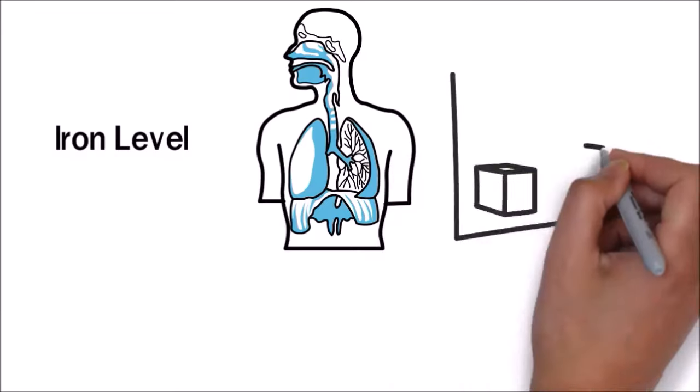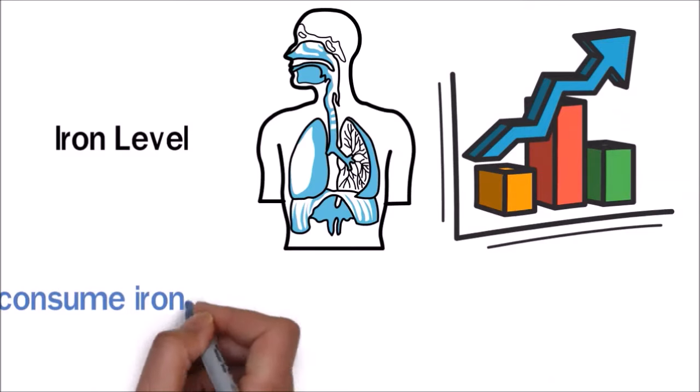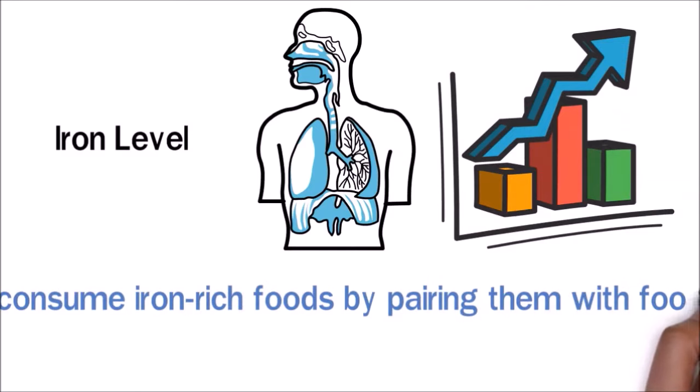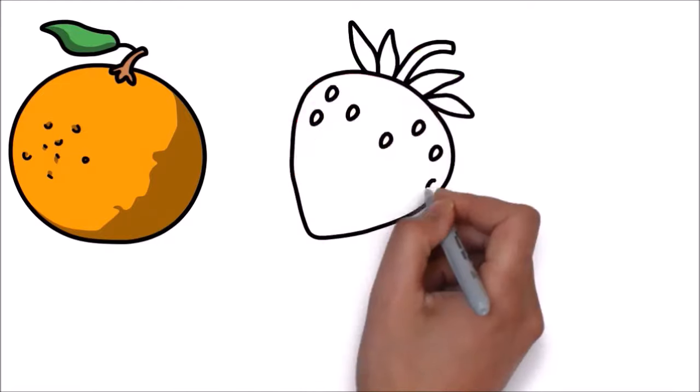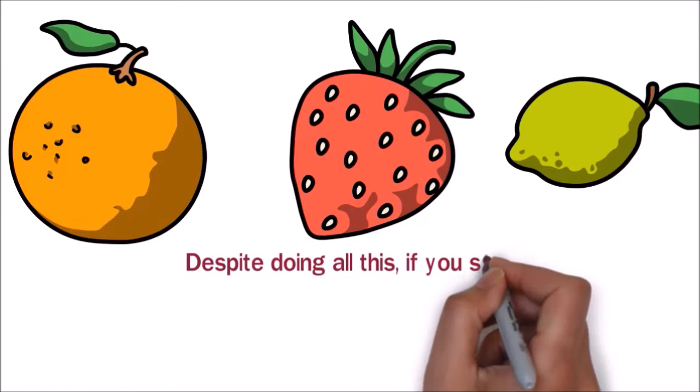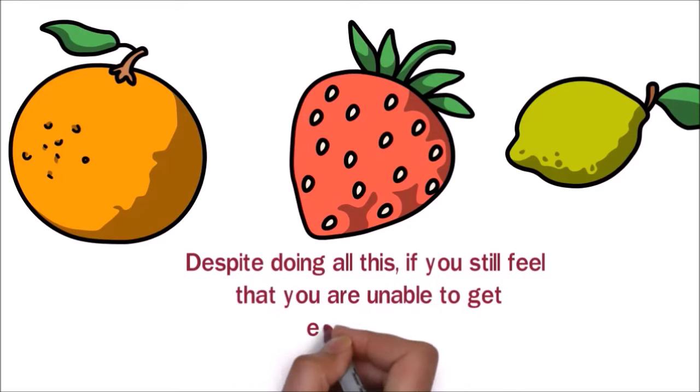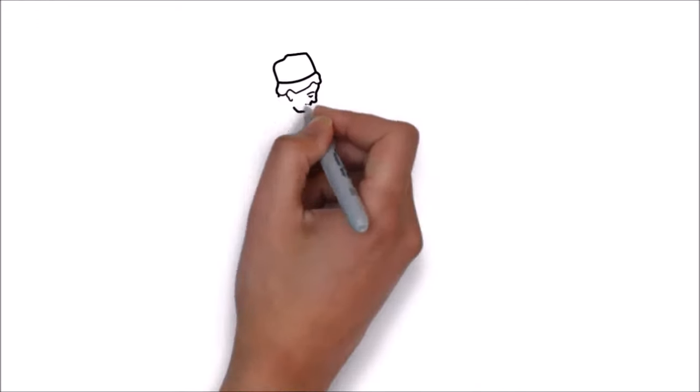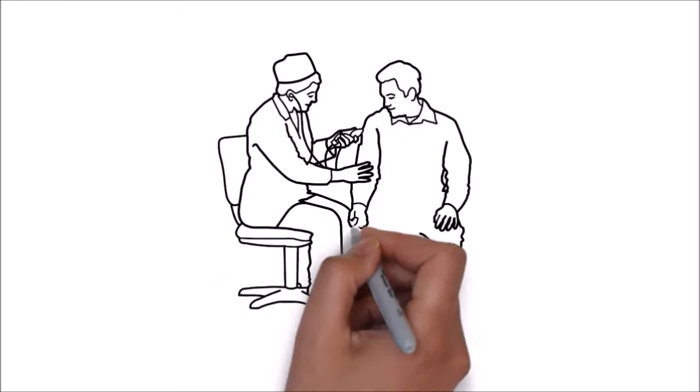To ensure that the iron levels in your body increase, consume iron-rich foods by pairing them with foods that are high in vitamin C, like oranges, strawberries, or lime. Despite doing all this, if you still feel that you are unable to get enough iron from your diet, consult your doctor for iron supplements or other treatment options.